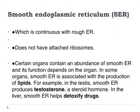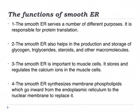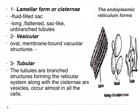Smooth endoplasmic reticulum has several properties. It is continuous with the rough endoplasmic reticulum and does not have attached ribosomes. In certain organs it is found in abundance, and its function depends on the organ. In some organs, smooth endoplasmic reticulum is associated with the production of lipids. For example, in the testes, smooth endoplasmic reticulum produces testosterone, which is a steroid hormone. In the liver, smooth endoplasmic reticulum helps with detoxification.